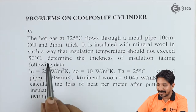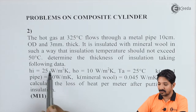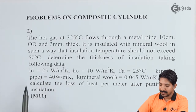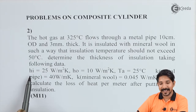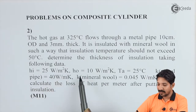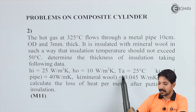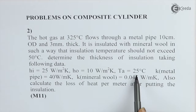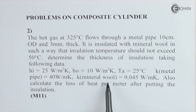The pipe carrying hot gas at 325 degrees Celsius is insulated with mineral wool, and the outside temperature should not be more than 50 degrees Celsius. For that condition, they are asking us to determine the thickness of insulation, given: hi (heat transfer coefficient for inside gas) = 25 W/m²K, ho (for outside air) = 10 W/m²K, ambient temperature = 25°C, thermal conductivity of the metal pipe kp = 40 W/mK, and thermal conductivity of mineral wool km = 0.045 W/mK.